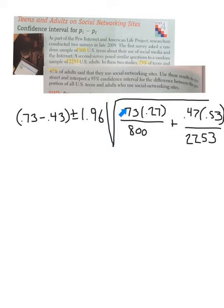And then, here are our proportions, teens, and then 1 minus that, divided by how many teens we surveyed, and 0.47, and 1 minus that, divided by how many adults. Let's take the square root, do all this stuff, and let's come up with some numbers.